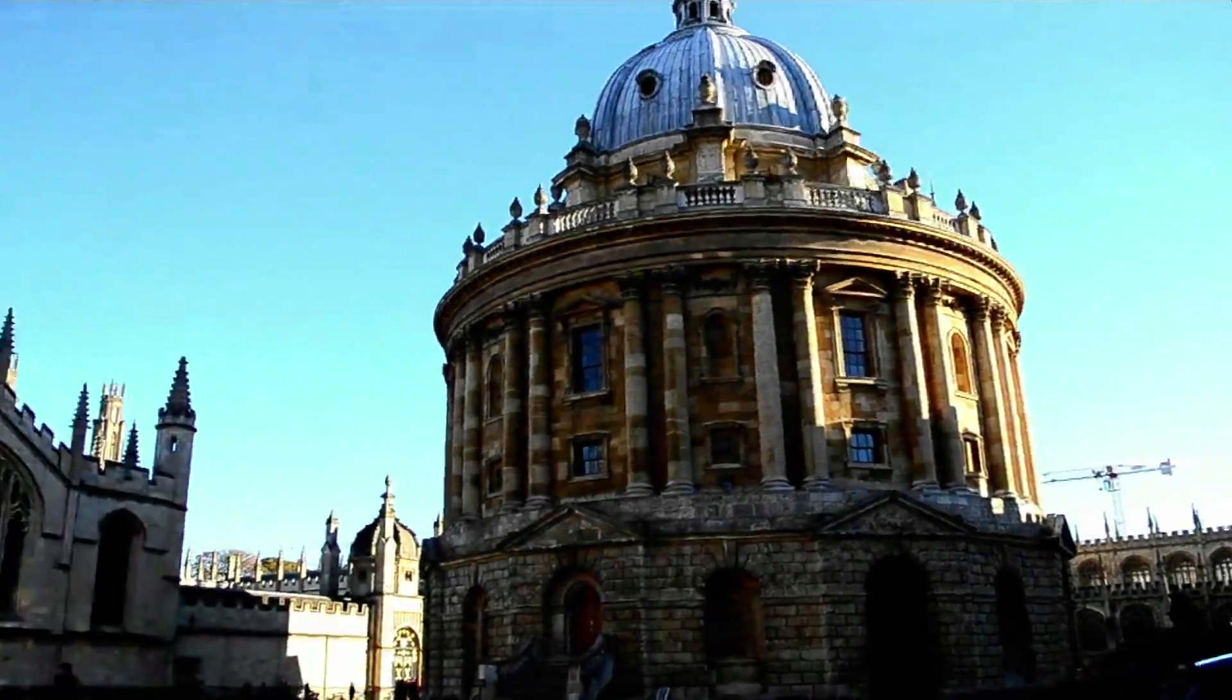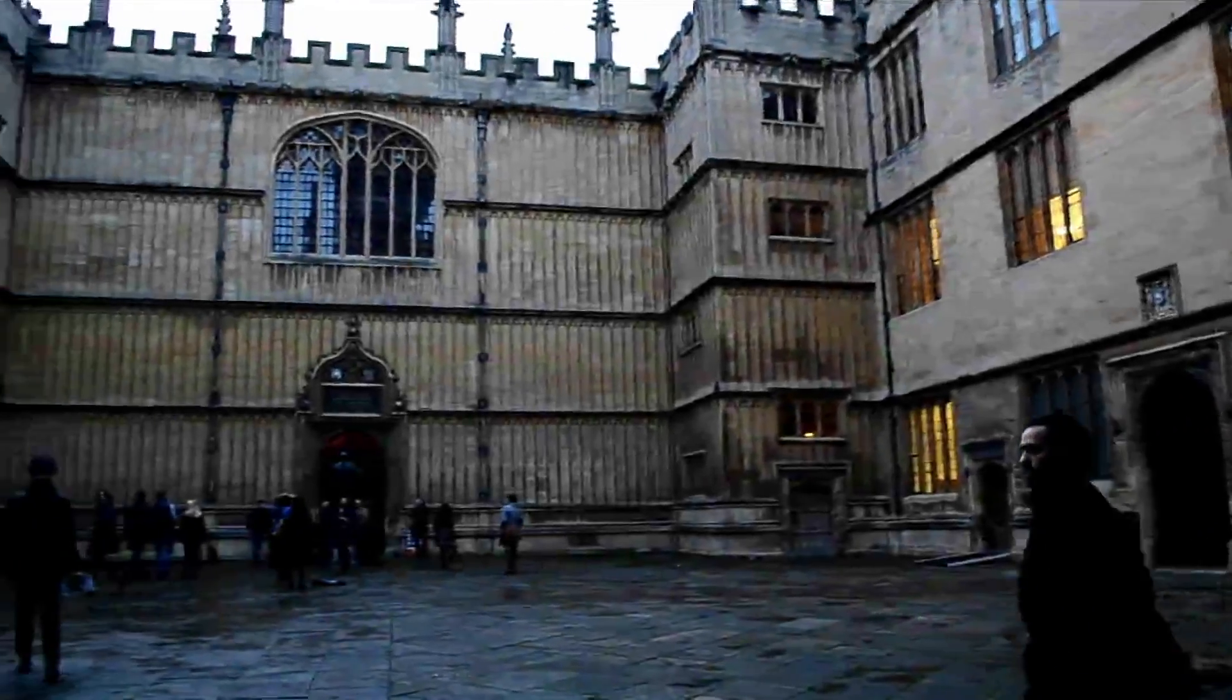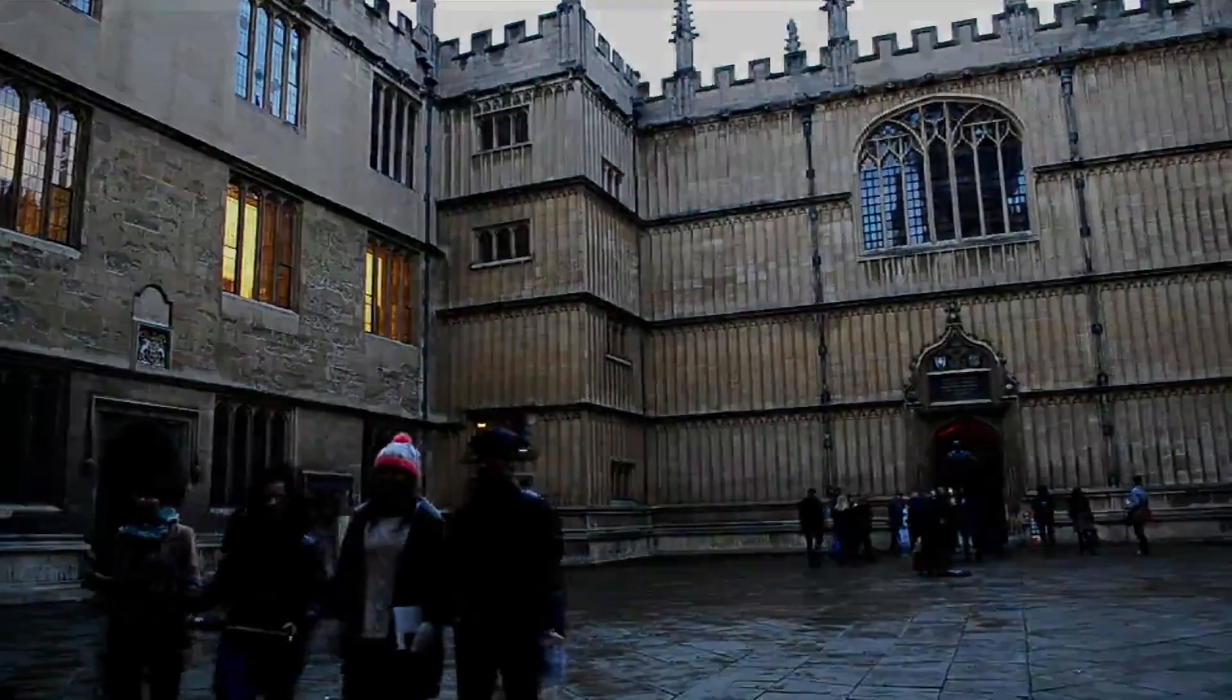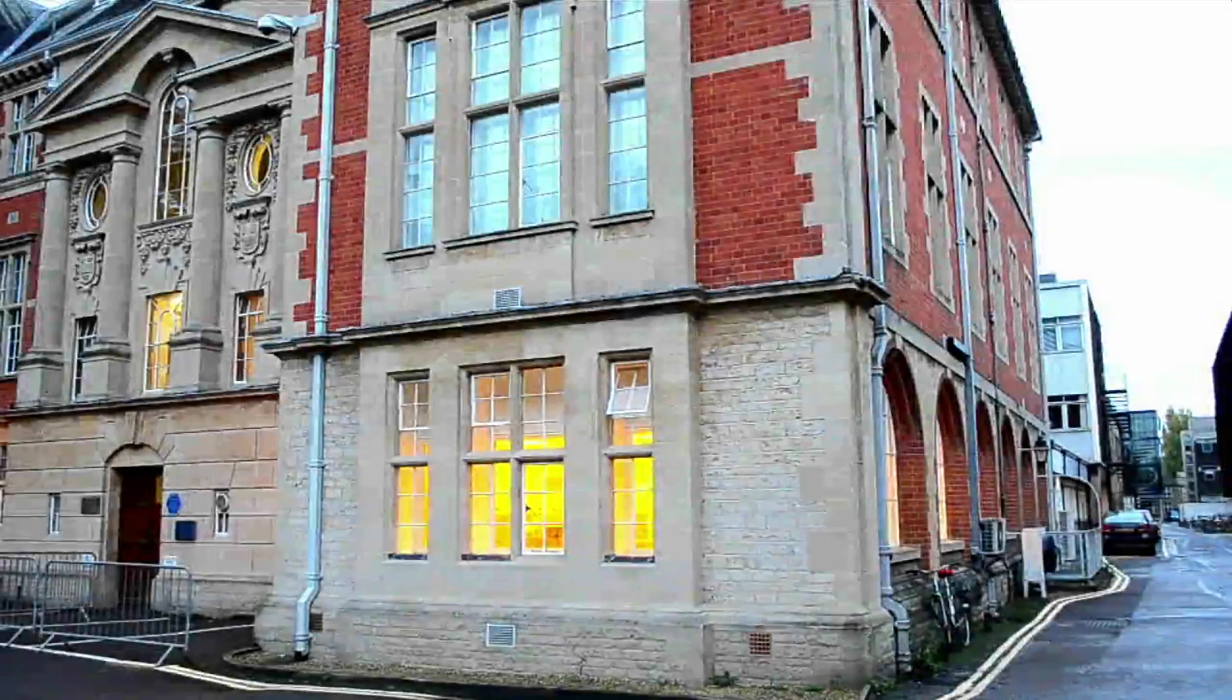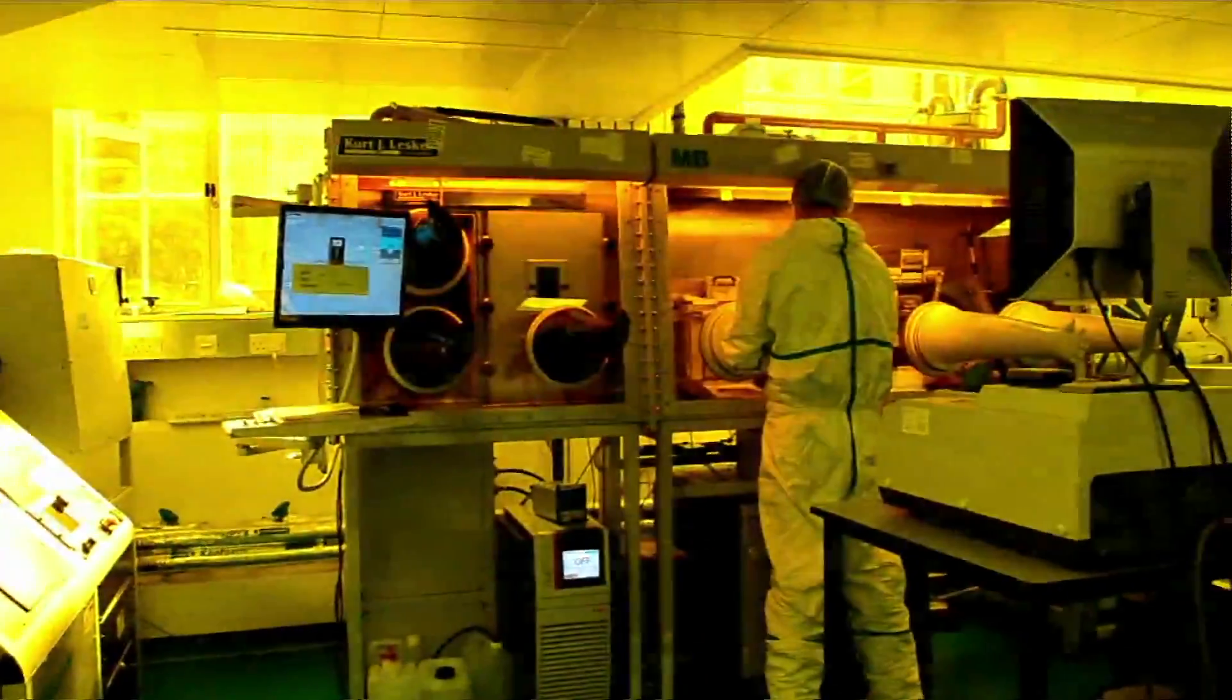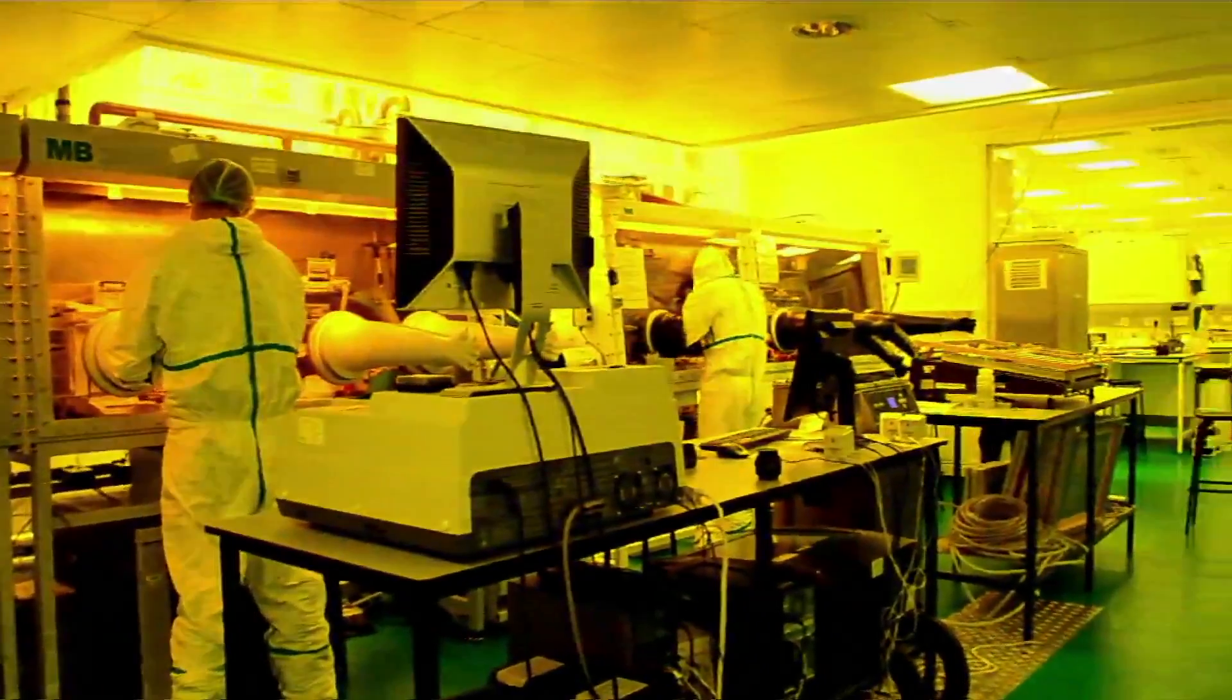Hello, my name is Henry Snaith. My research group is based in the physics department of Oxford University. My research group primarily focuses on photovoltaic devices. My activities range from synthesizing new materials, optimizing devices, then characterizing them, and a little bit of spectroscopy and more fundamental investigations as well.